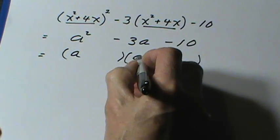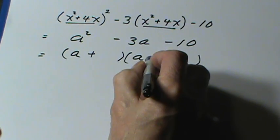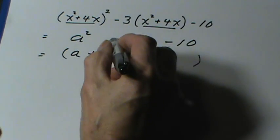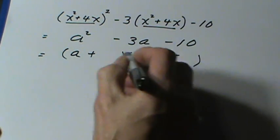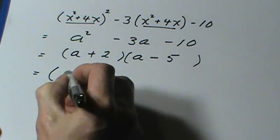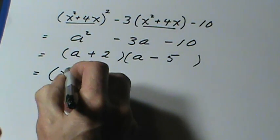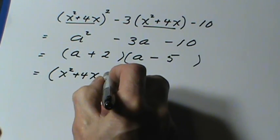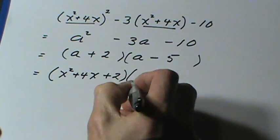Signs are different. So there's a plus and a minus. I need factors of 10 with a difference of 3. That's 5 and 2. Put the 5 with the minus sign. Then I'm going to replace the a with what it was standing for. The a was standing for x squared plus 4x. So I'll put that back into the brackets.